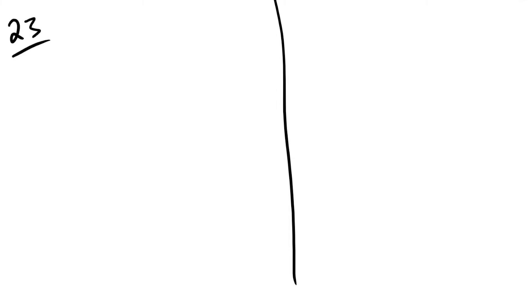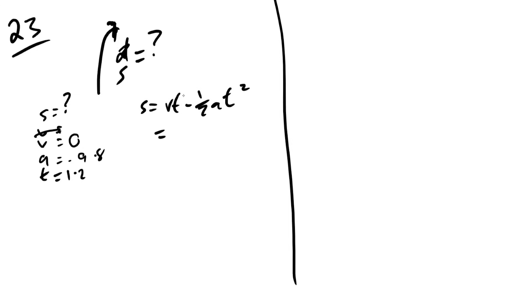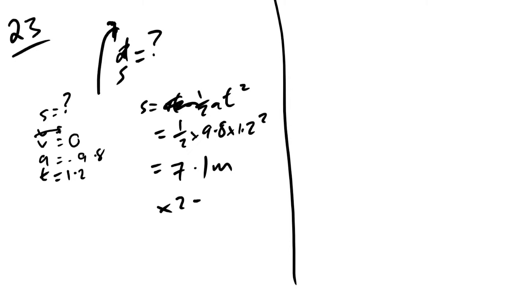Question 23: a ball thrown upwards returns to its original position after 2.4 s, so it reaches the top after 1.2 s. Using s = ½at² = ½ × 9.8 × 1.2² ≈ 7.1 m for the upward distance, total distance travelled is 7.1×2 ≈ 14 m. The answer is C.